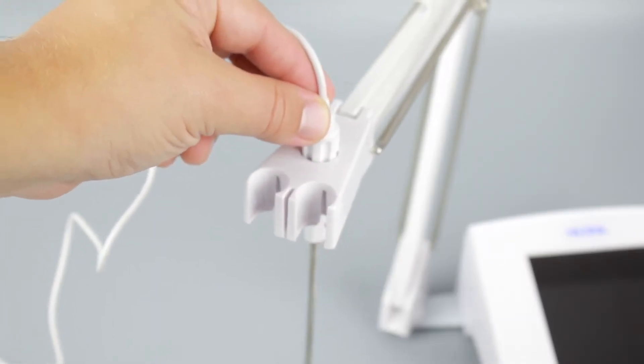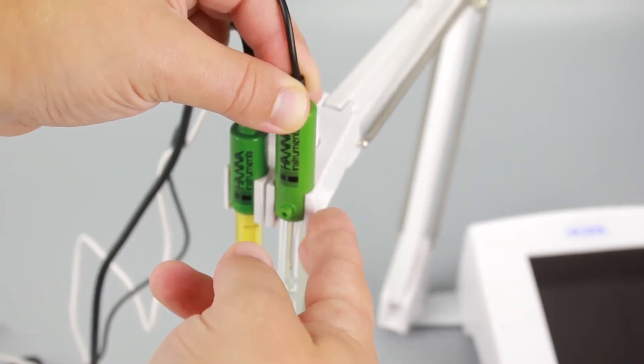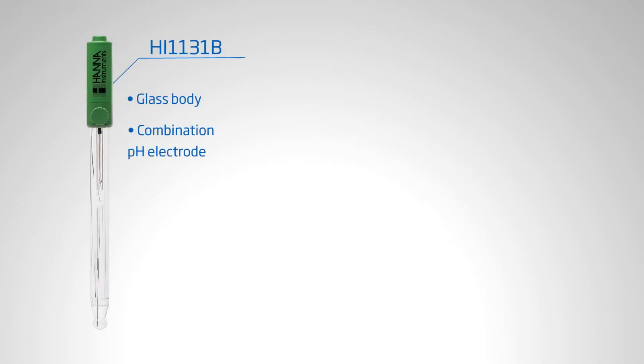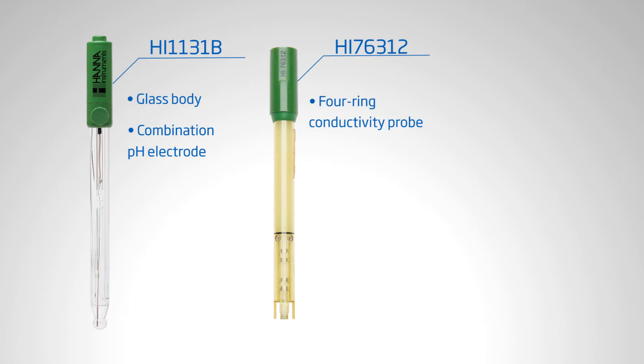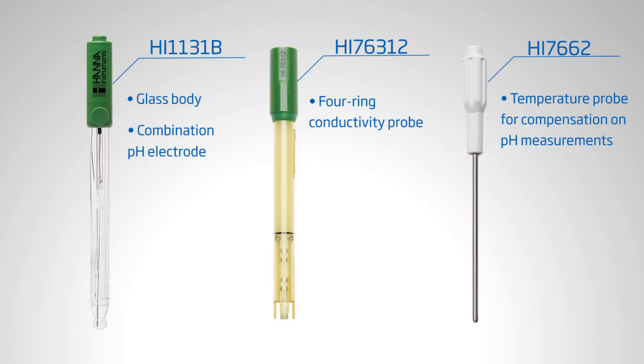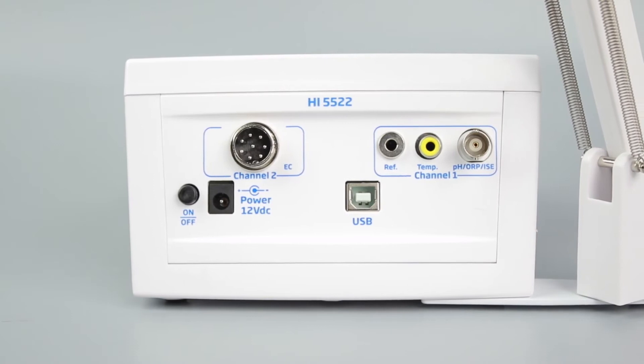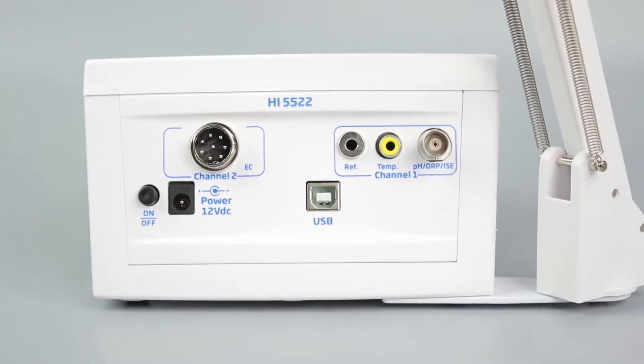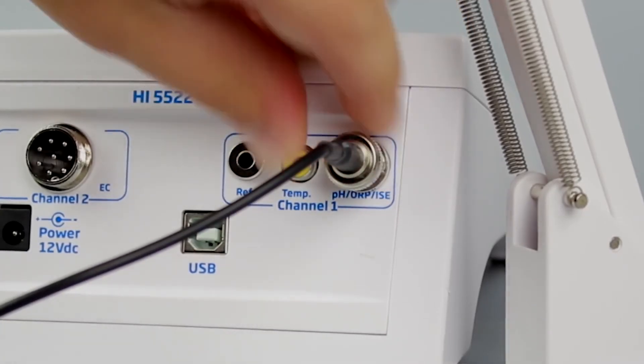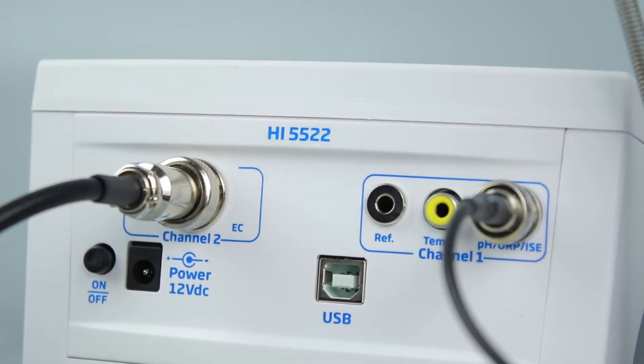To set up your meter, first insert the probe and electrodes into place. The meter is supplied with the HI1131B glass body combination pH electrode and HI76312 four-ring conductivity probe. You'll also find the HI7662 temperature probe for compensation on pH measurements. On the back of the meter, you will see inputs for each channel. Attach the desired sensors to the inputs and make sure that each connection is securely fastened.